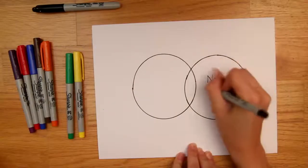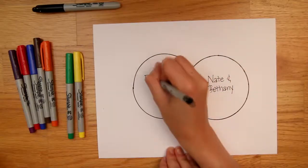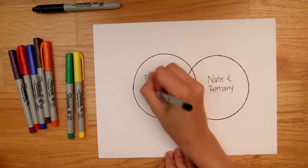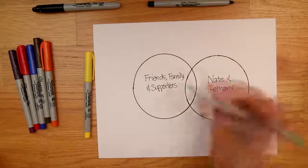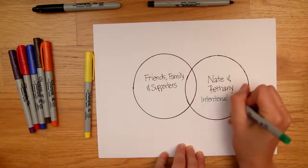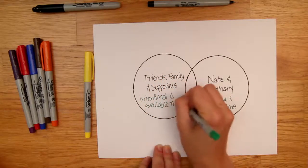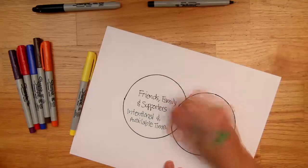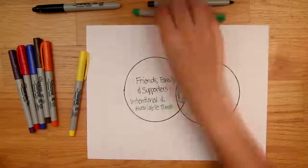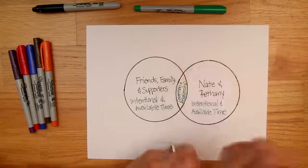You just heard Nate talk about intentionality and how important that will be when we're in Austria. So in order to stay connected with you, our friends, family, and supporters, there needs to be intentionality on both ends. As you can see here, if we both seek to find intentional opportunities to connect when we're available, relationship and engagement comes out of that.